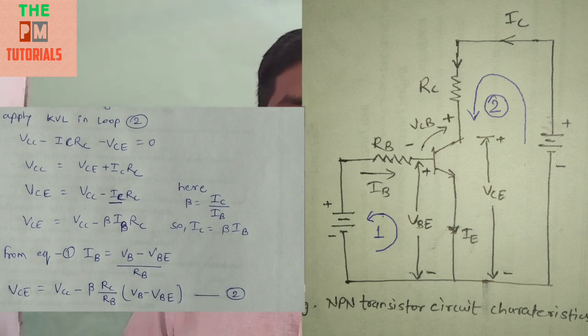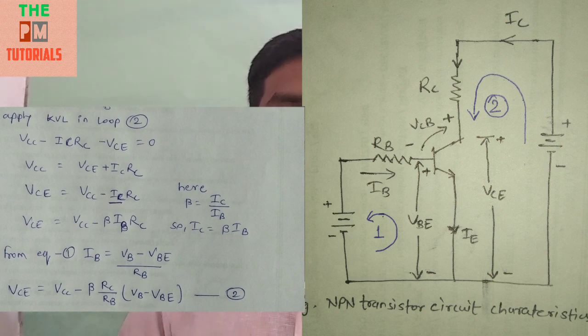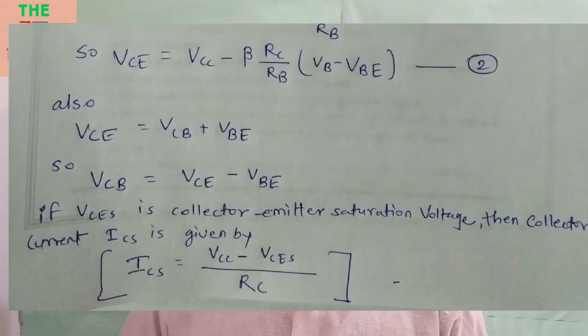Now from the above equation, equation number 1, IB is equal to VB minus VBE upon RB. We can put this value in the equation number 2, so we can derive the equation: VCE is equal to VCC minus beta*RC upon RB times VB minus VBE.